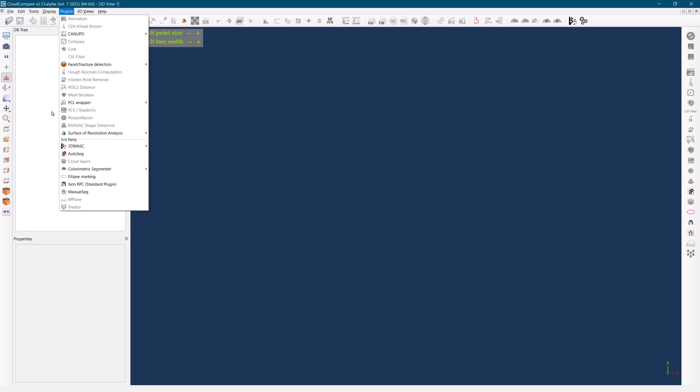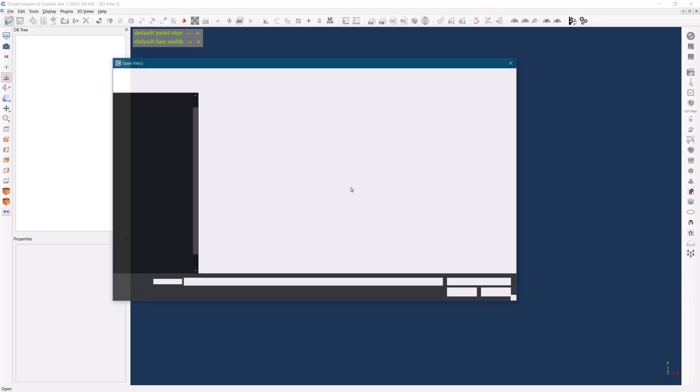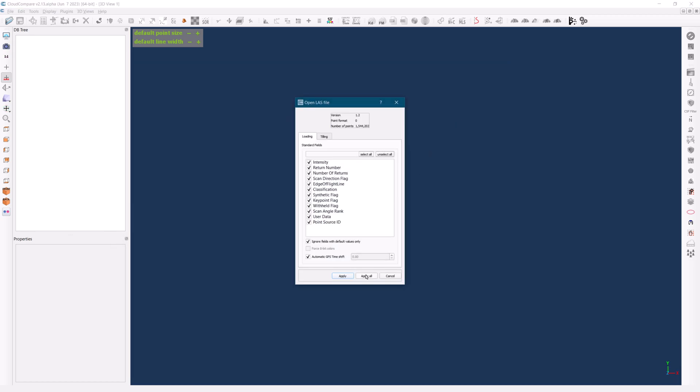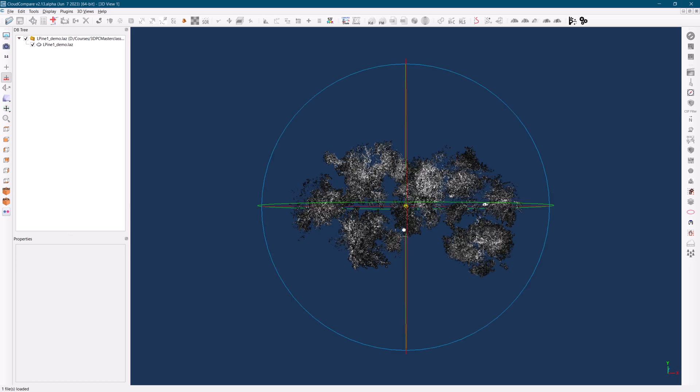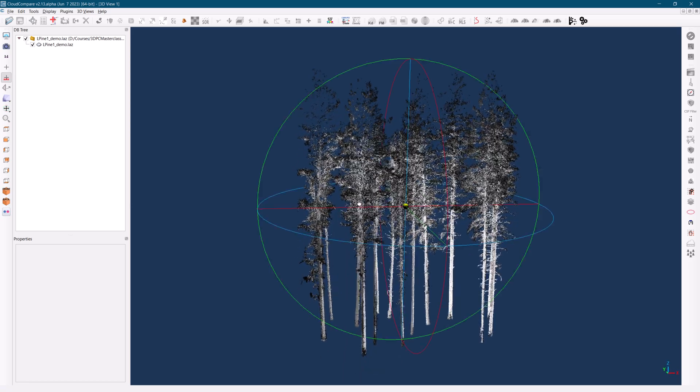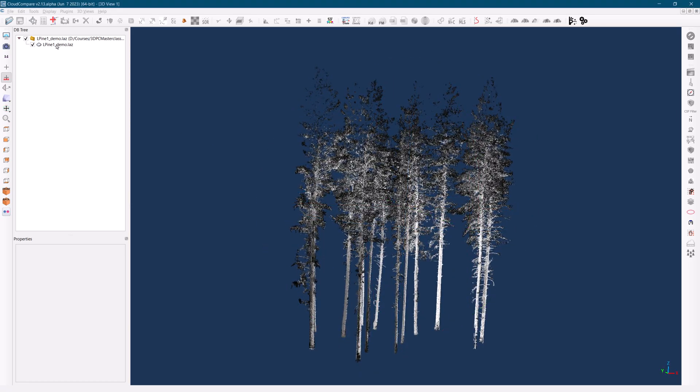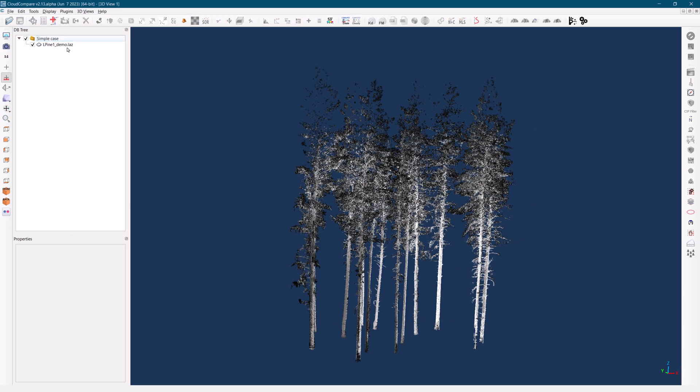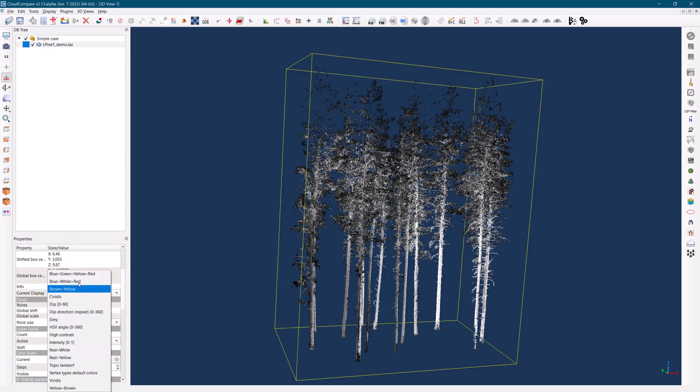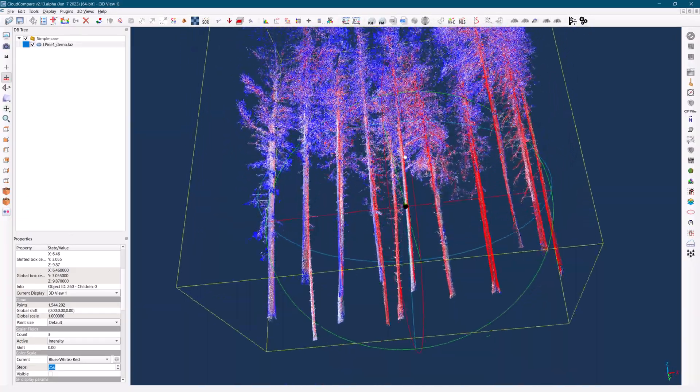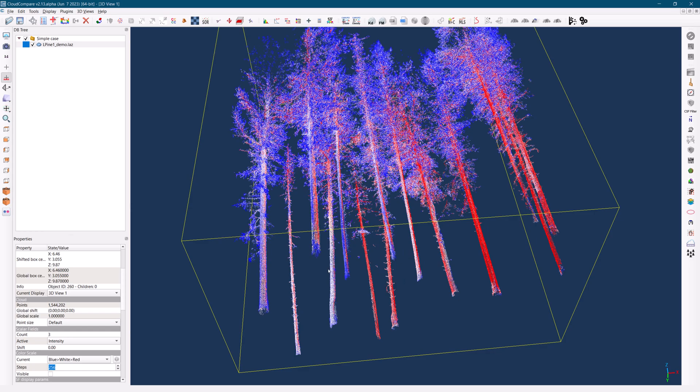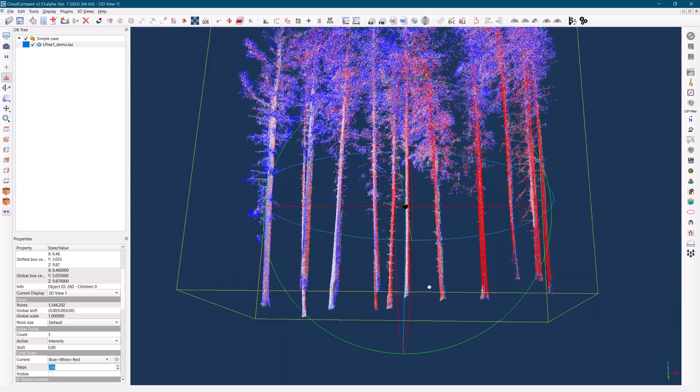Once you have CloudCompare installed, open the point cloud dataset generated by terrestrial laser scanners. You can find the data in the resources section of your course materials. This particular point cloud contains 14 trees, and our objective is to verify if we can accurately isolate all 14 trees using the TreeISO plugin.